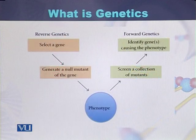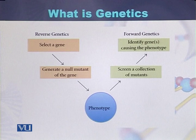Genetics can be studied in two different ways. One way is called reverse genetics, while the second method is called forward genetics.